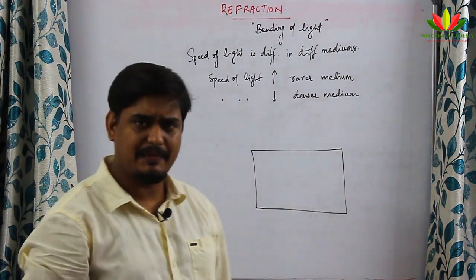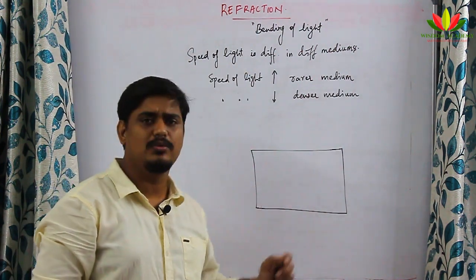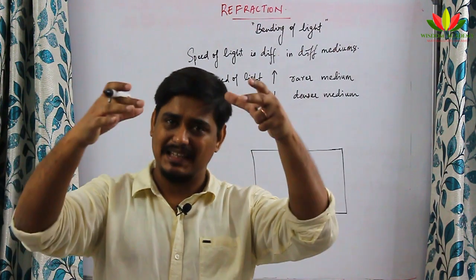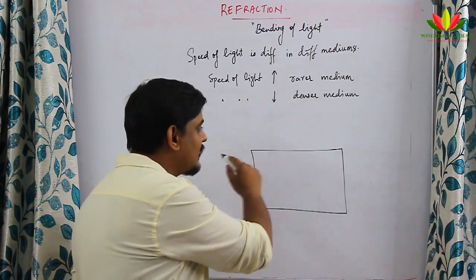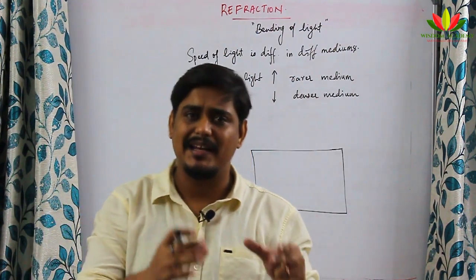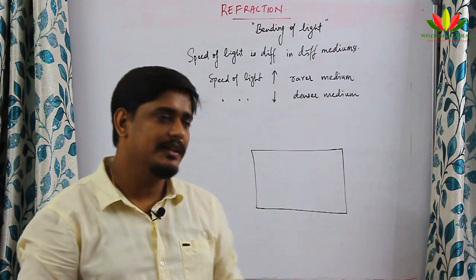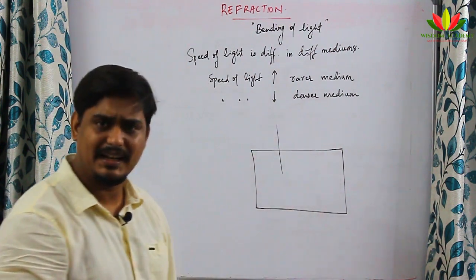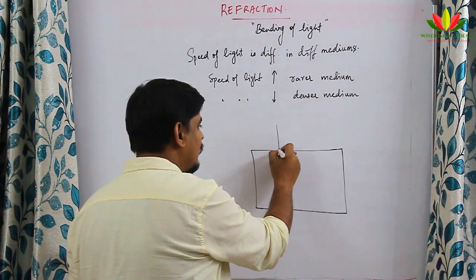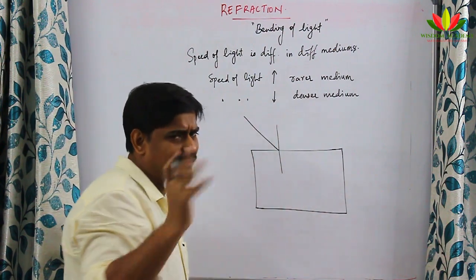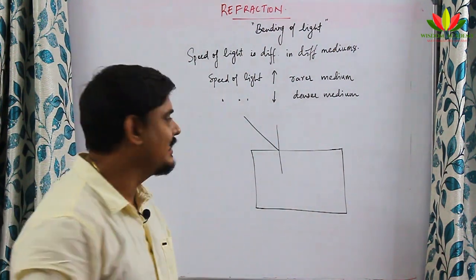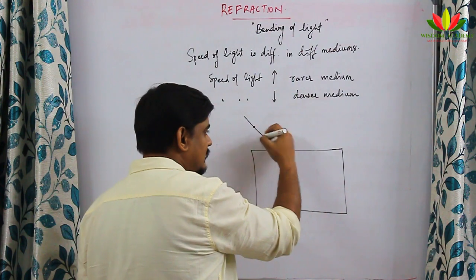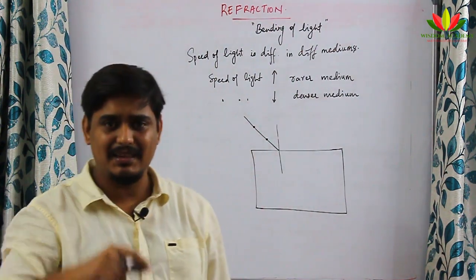Most of you will do this experiment in school laboratories. We take a paper, place a glass slab on it, mark the boundary of the glass slab, then remove it. On this boundary we draw a perpendicular line, then draw another line at any angle. On this line we keep two pins.